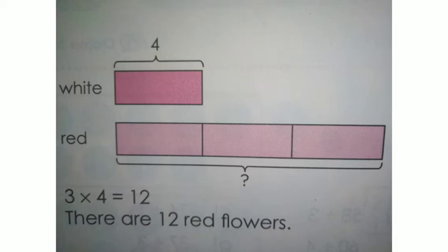3 fours are 12. For this you have to draw a bar diagram before doing the calculation part. See here, white flower is given as 4. We have to multiply 3 times as white flowers, so we will get 3 into 4 equal to 12. In the bar diagram, red flowers are 3 times increased. So we got the answer as 3 times 4 equal to 12. Therefore, there are 12 red flowers.